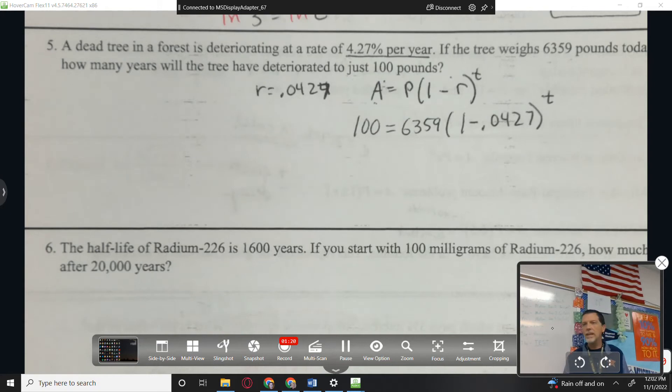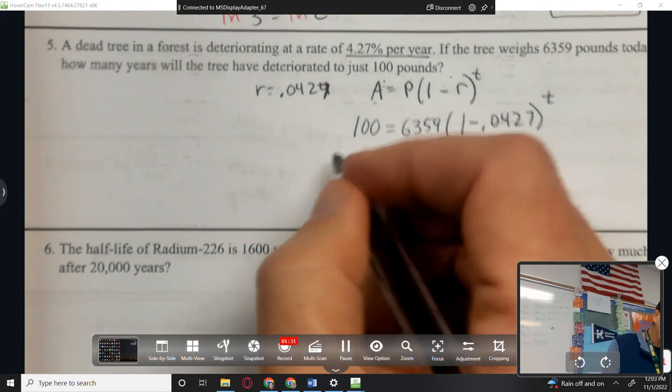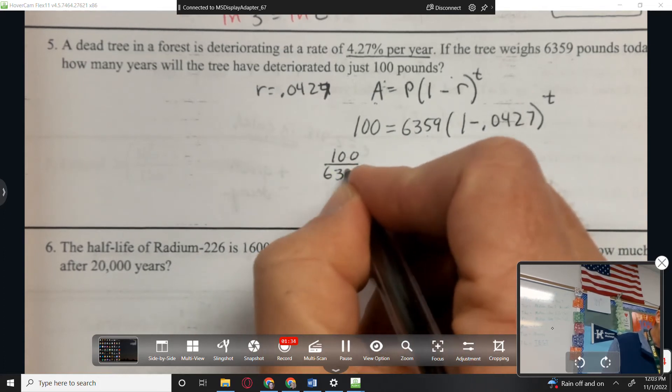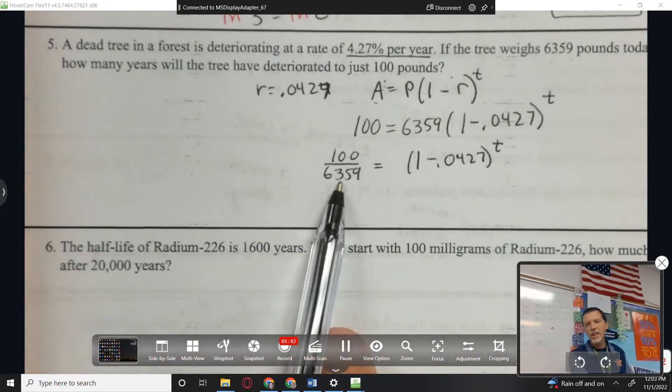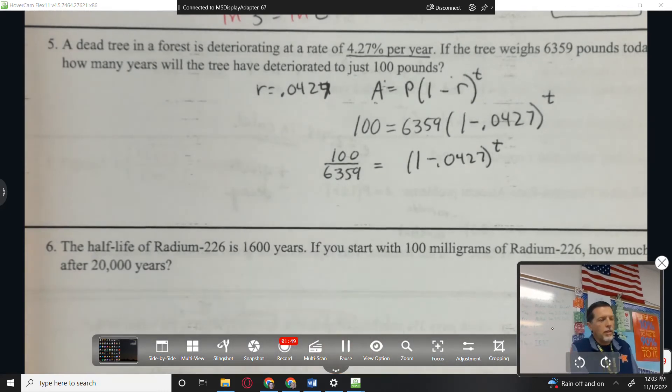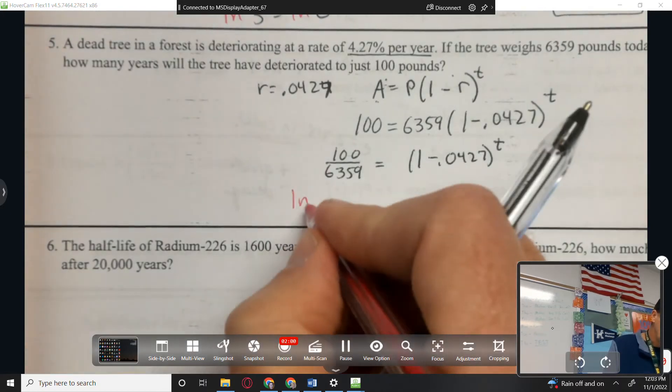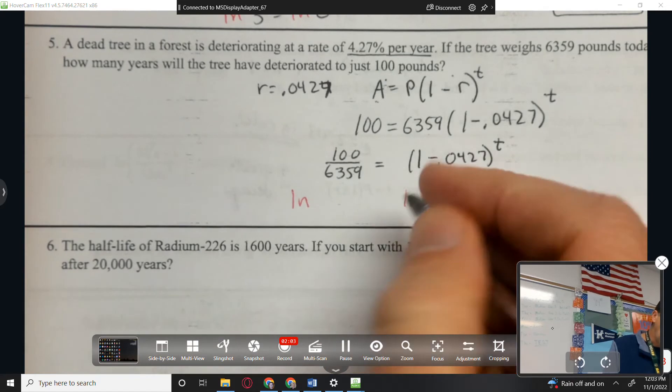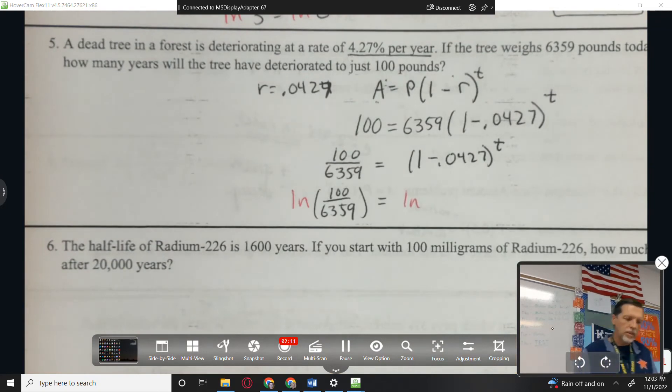And again, we're thinking it's going to be a big T to drop that much weight at 4% per year. So I need to solve for T. Let's divide both sides by 6359. Some of you guys are going to go to the calculator early in the process, and that's okay. You'll just have to carry that decimal the whole way through. I'm going to leave it as a fraction and then just type it in once at the end. Let's natural log both sides to get that T out of the exponent.